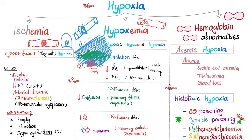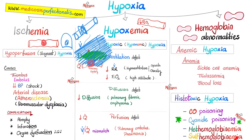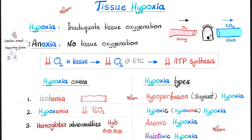The body knows how to deal with methemoglobin by methemoglobin reductase. To learn more about CO poisoning, cyanide poisoning, and methemoglobinemia, I have dedicated videos in my hematology playlist. I also have a video on sulfhemoglobinemia as part of my toxicology course, which you can download on my website, medicosisperfectionist.com. Please pause and review.